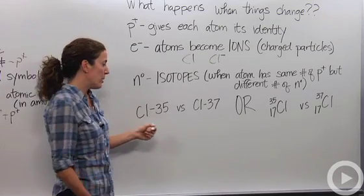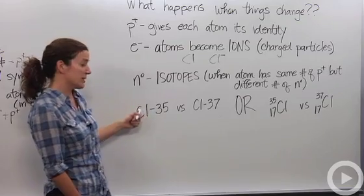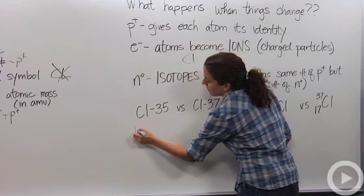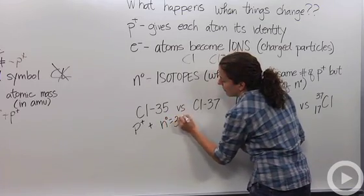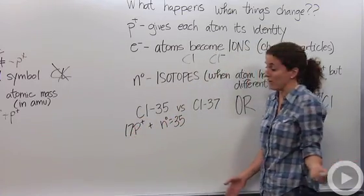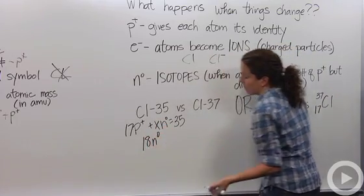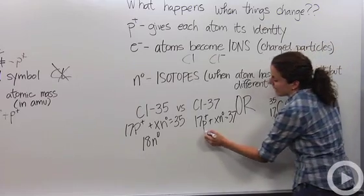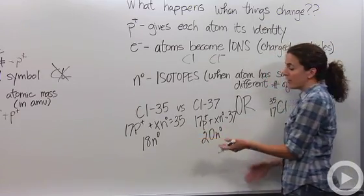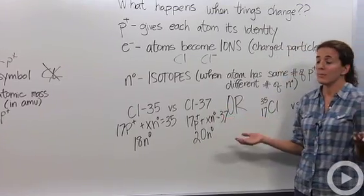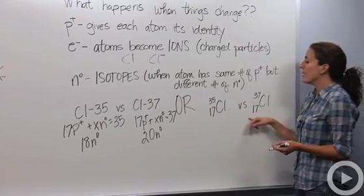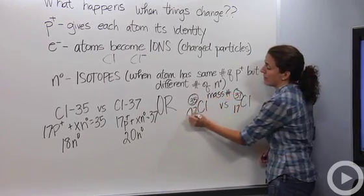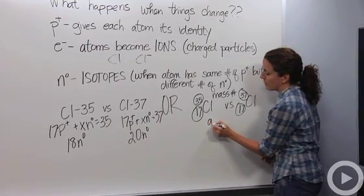So how do we denote when something is an isotope? There are two ways. We can have the symbol with the mass number — the number of protons plus neutrons. For chlorine-35, 17 protons plus 18 neutrons equals 35. For chlorine-37, 17 protons plus 20 neutrons equals 37. These are isotopes of each other — different numbers of neutrons. You might also see it written with a dash and the mass number, like Cl-35, or in notation with the mass number on top and the atomic number (17 protons) on the bottom.